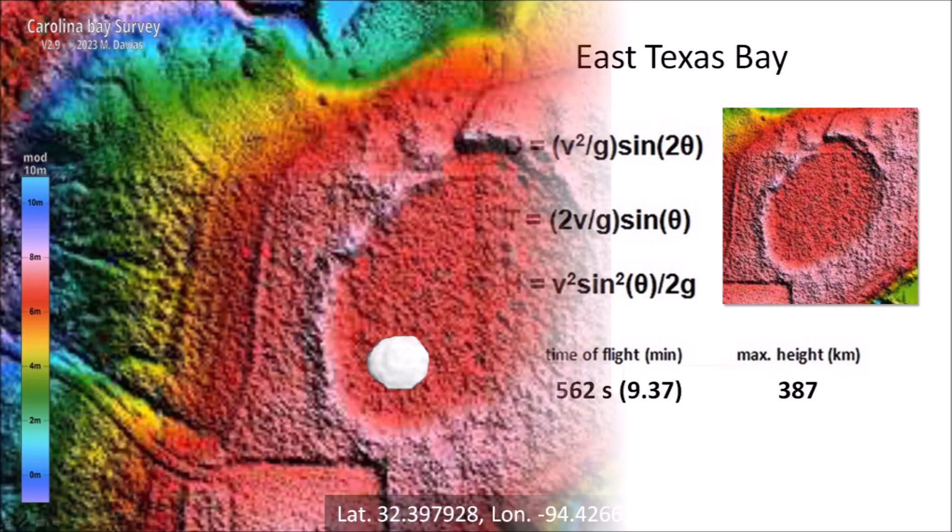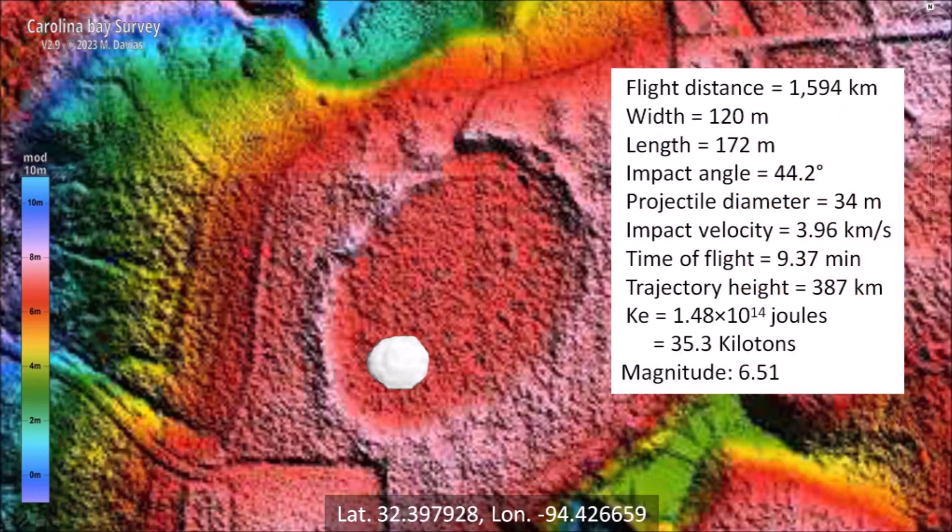The kinetic energy of the impact that made this basin was equivalent to 35.3 kilotons of TNT, which would have caused seismic vibrations of magnitude 6.51.